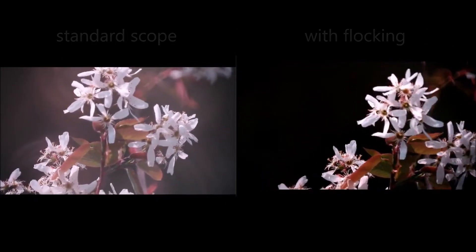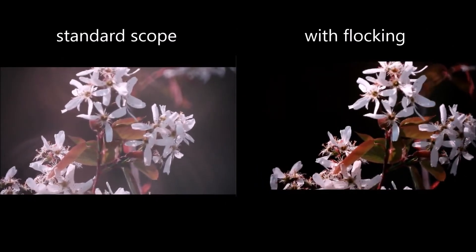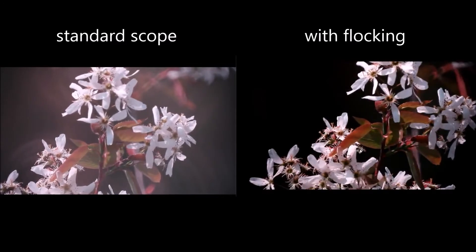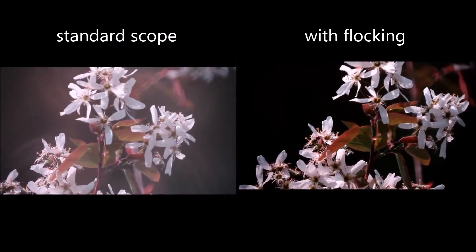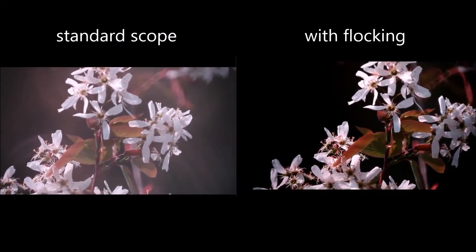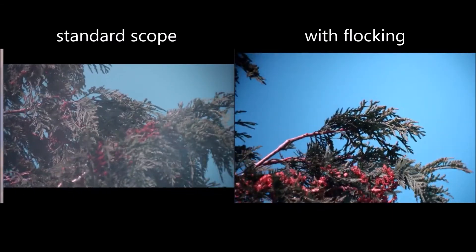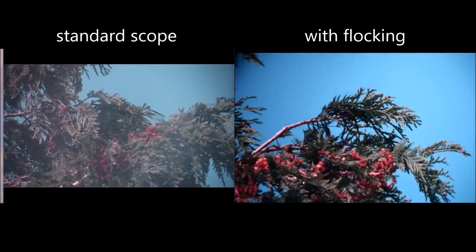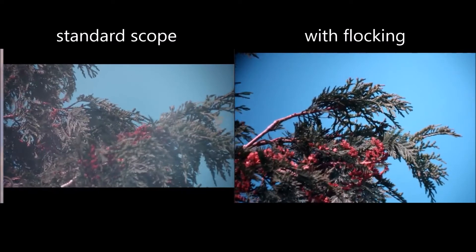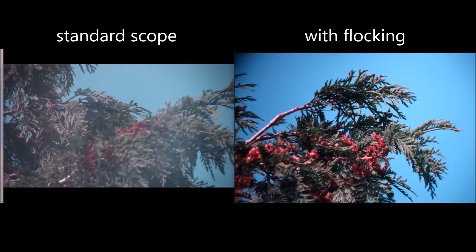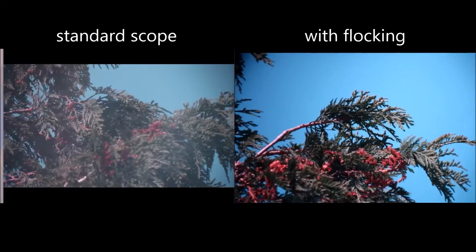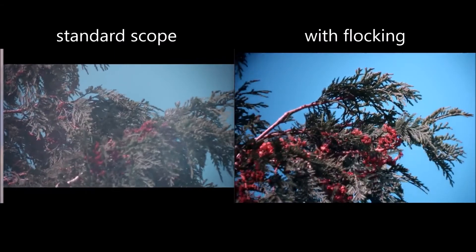So in daytime use on the left, we've got the original scope and on the right, we have the same view with the flocking paper inserted. The same again here. This is looking at an object with a very bright sky background, so we're going to expect to have a lot of light potentially bouncing around inside that baffle tube.